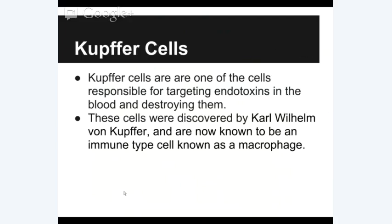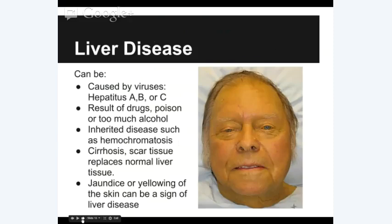In my research into the liver, I came across what we call Kupffer cells. They are responsible for targeting endotoxins in the blood and destroying them. They were discovered by Carl Wilhelm von Kupffer and are now known to be an immune-type cell called a macrophage. Just like macrophages in the immune system go around and gobble up infected cells or foreign bodies, these cells in the liver target endotoxins and break them down using proteins like catalase and alcohol dehydrogenase, releasing products that are more useful or can be excreted — for example, breaking ammonia down into urea, which is excreted via the urinary tract.